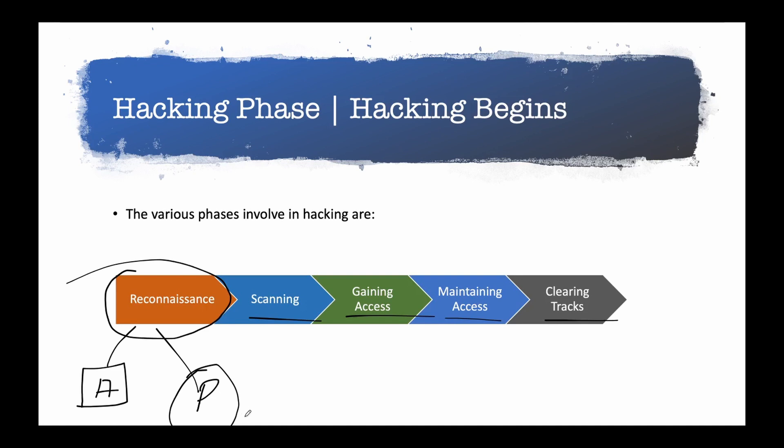In passive recon, think of it this way: instead of asking you directly for information, I call your friend and gather all the information from him. So technically I'm not talking to you directly, but indirectly I'm gathering all the information about you. This is the main technique and most recommended approach for reconnaissance, because it gives you complete in-depth detail about your target.